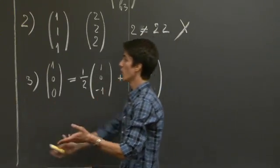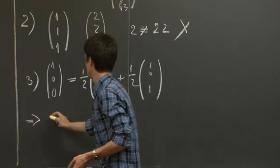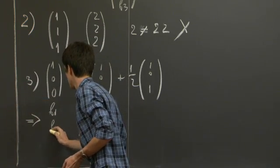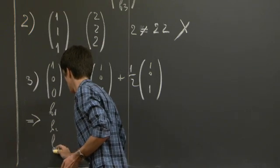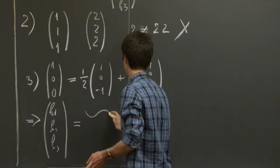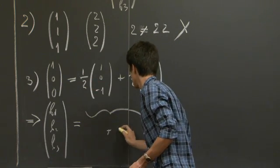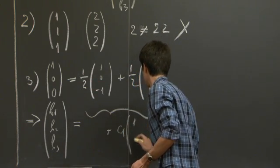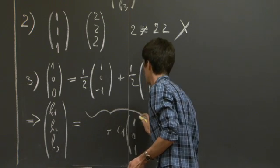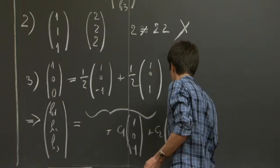So we can write the whole relation here in the following way. (b1, b2, b3) is (1, 0, 0), which we can write as this, plus c1 (1, 0, -1) and c2 (1, 0, 1).